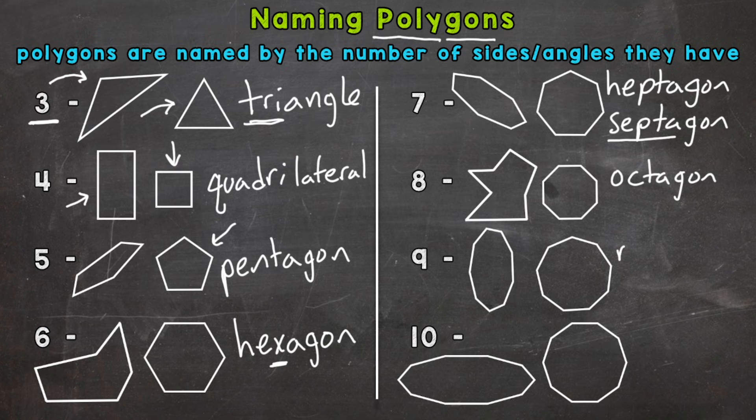Nine—nonagon, which kind of sounds like nine. And then lastly, ten sides and angles—decagon. You can remember this one because a decade has ten years, and a decagon has ten sides and angles. Deca means ten.